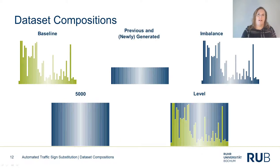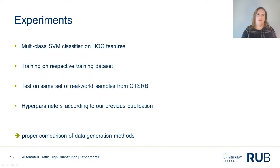Now that we've got our datasets, let's have a look at the experimental setup. All experiments have a similar setup. We used a multi-class support vector machine on histogram of oriented gradients features to classify real-world traffic sign images. Each SVM has been trained on a different training set, but all classifiers are tested on the same test set comprised of unseen images of the GTSRB dataset. In order to compare the datasets to each other, we've decided to use the same hyperparameters as in our previous work, aiming not for peak performance, but for proper comparison and understanding of the training data.